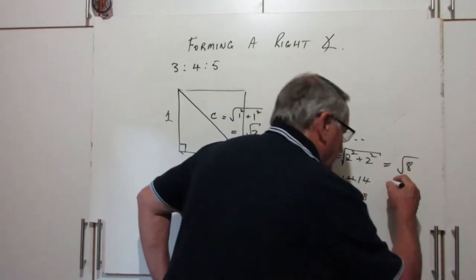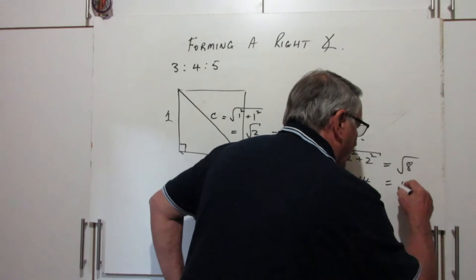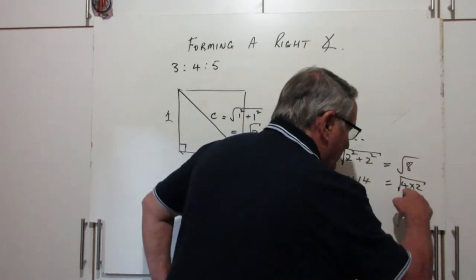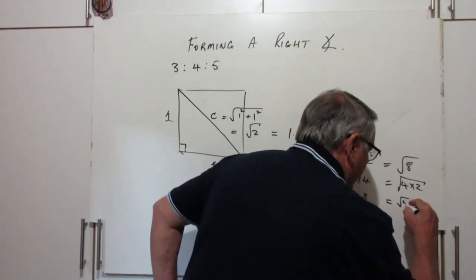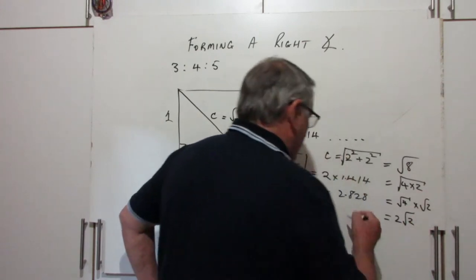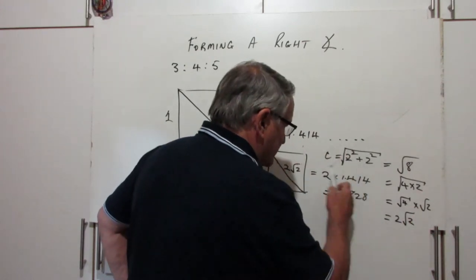Now, interestingly, this is 4 times 2. When you're multiplying inside a square root, you can do the square root separately. Square root of 4 times the square root of 2, which is 2 times the square root of 2, which is what we said here.